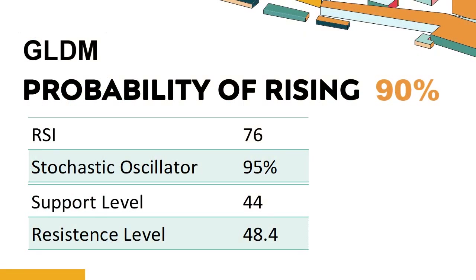What technical signals should you look for when analyzing GLDM? GLDM's 14-Day Relative Strength Index (RSI) value was 76. When the RSI exceeds 75, it is considered to be in the overbought region, the stock price may be overvalued, and a price correction may be required. It means that the stock price has been experiencing a strong uptrend and it has risen too fast, causing the RSI to reach a high level.